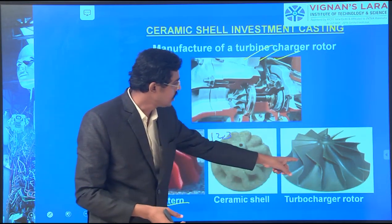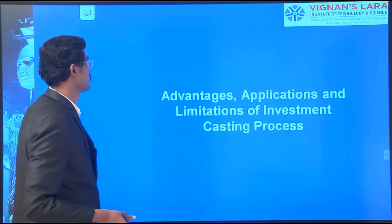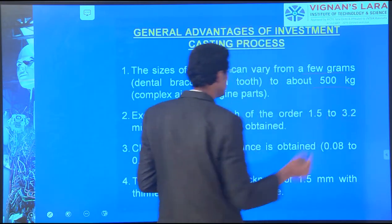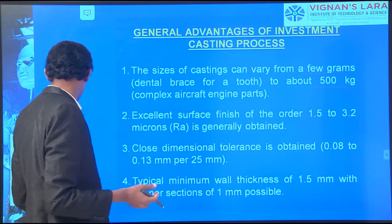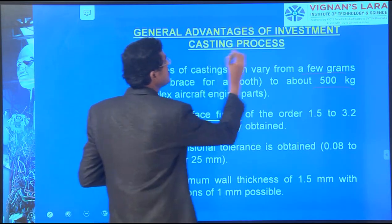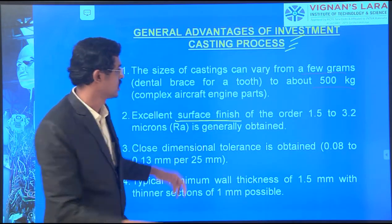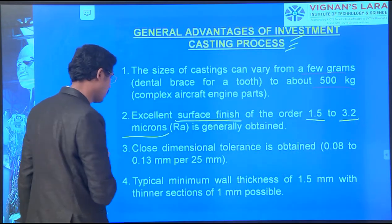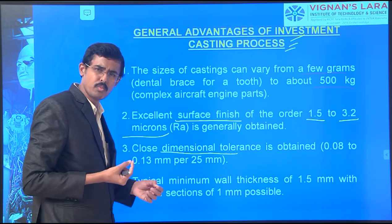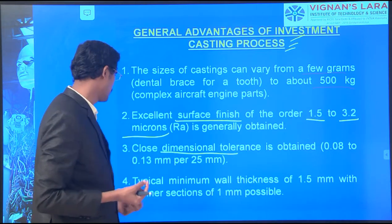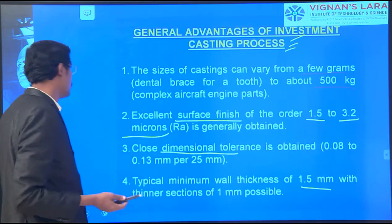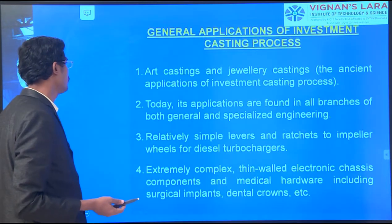One time dipping, two times dipping, three times dipping - increasing the thickness from 1 mm to 4 mm. Therefore it is heavy and can withstand the hot mold. Then finally pouring and solidifying - the products are ready. The advantage: the size of casting can range from a very few grams to 500 kg. Excellent surface finish of 1.5 to 3.2 microns. Close dimensional tolerance of 1 mm to 1.5 mm. Typical minimum wall thickness of 1.5 mm.